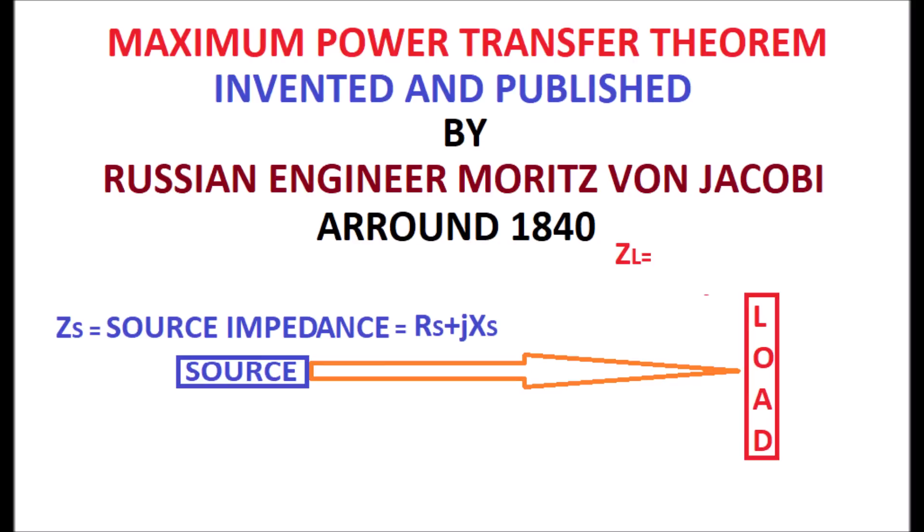Similarly, the load impedance is Zl which is equal to Rl plus jXl. Rl and Xl are the resistance and reactance of the load.